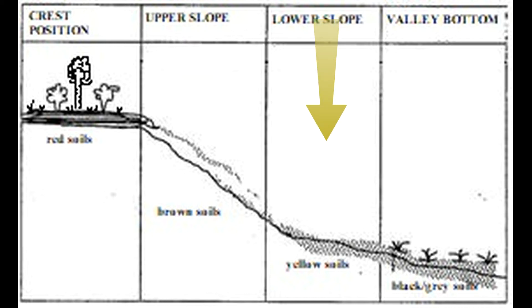Let's look at the lower slope. At this site, the soil experiences seasonal waterlogging. The soil is brown at the top and yellow at the bottom due to iron oxides being reduced. Occasionally there is waterlogging — if the rainy season brings more rainfall, that area may experience waterlogging. That area is not as steep as the area above it, so water may accumulate and saturate the soil, causing it to become brown and then turn yellow as we go down the lower slope.